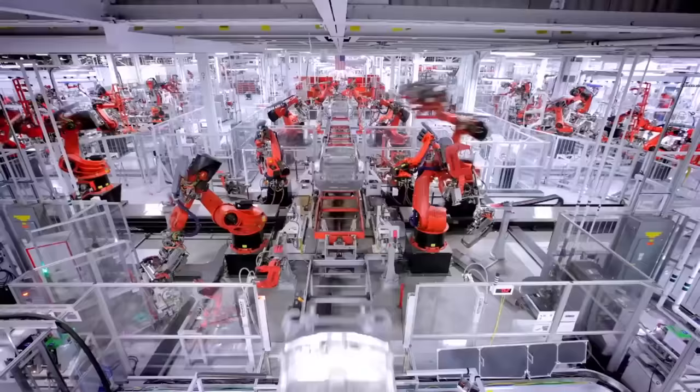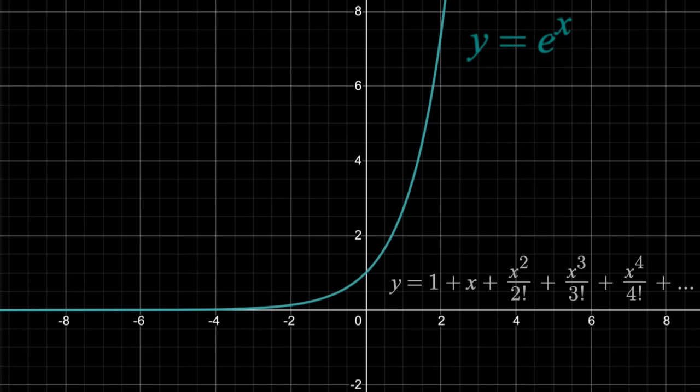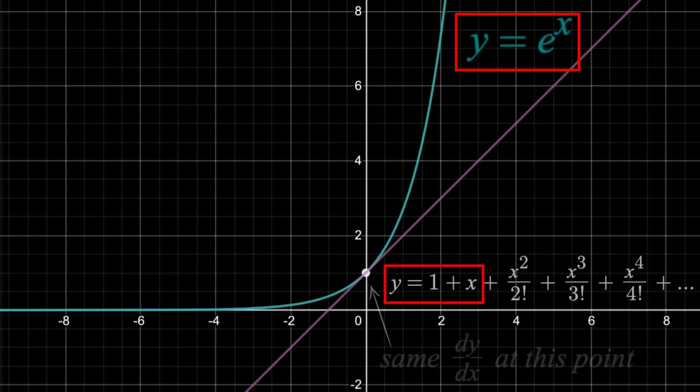Now, as a real quick overview, here we have the McLaurin series for e^x. Simply put, this is a polynomial that approximates e^x better and better the more terms you include. If I just graphed y equals these first two terms, then we get a tangent line approximation, which is only a good approximation for x values close to zero. But the important thing to note is that this function and e^x have the same first derivative and y value at x equals zero.